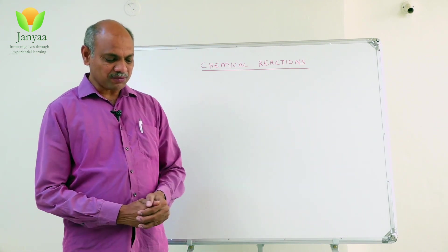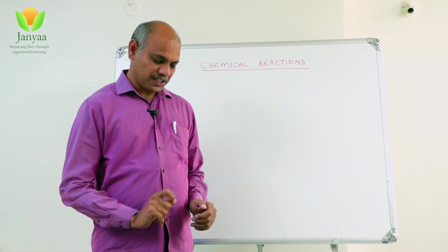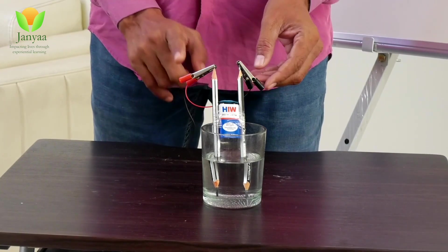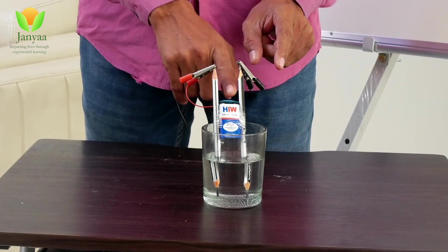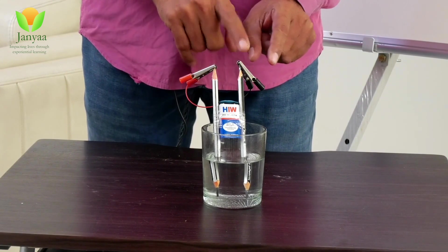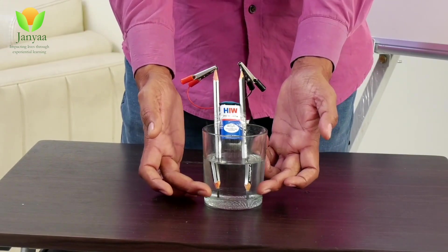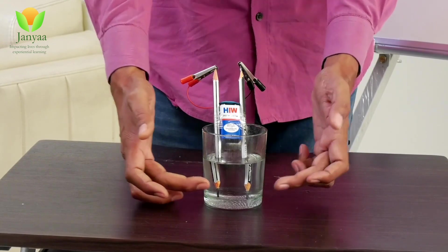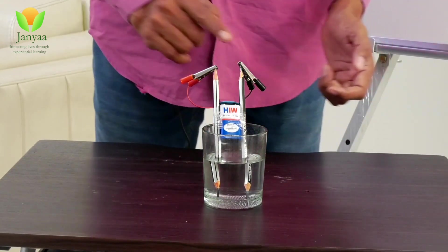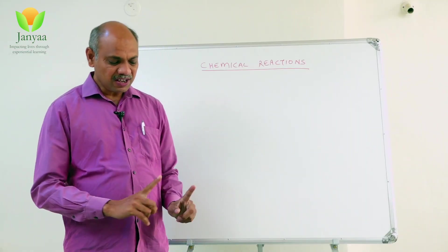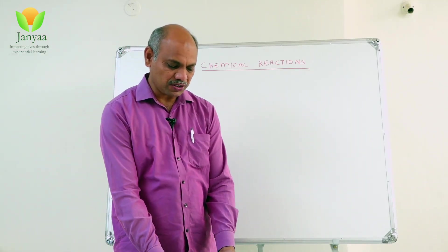Just I am connecting this crocodile clips to the graphite rods here, or here pencil lids. You observe for some time. Now, you see a battery is giving electricity. Current is passing from here to here but the circuit is open here. These two are not connected. Therefore, electric circuit is not complete. That means current should not pass through this water.